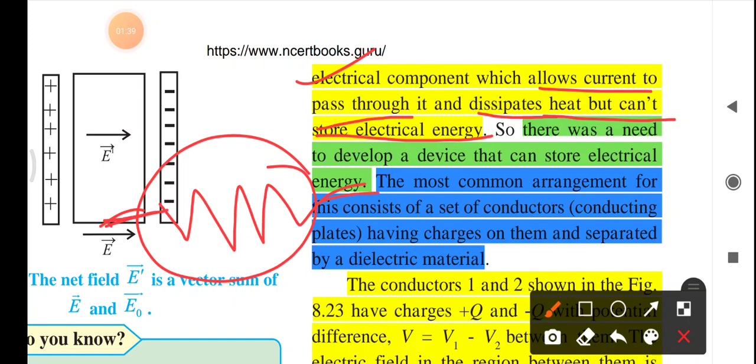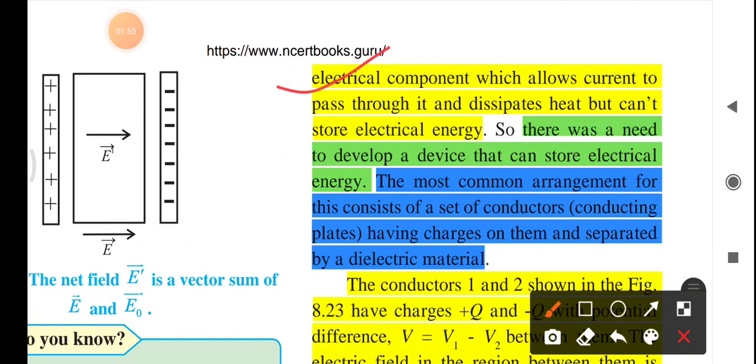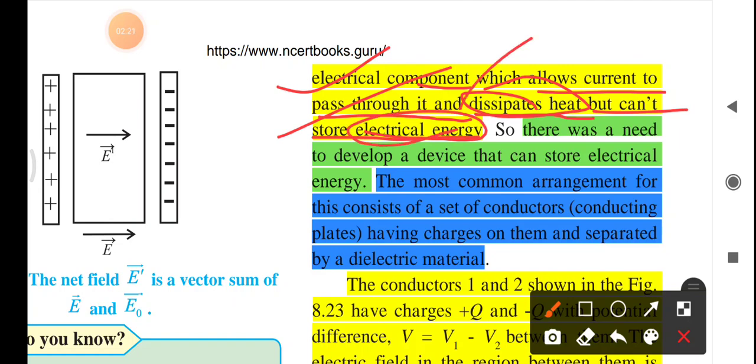Resistance means what? Opposition to the flow of the electric current. Just as in mechanics, friction is important—too little friction and motion is not possible, too much friction and motion is also not possible. Similarly, minimum resistance is good, but higher resistance is lack of conductivity. An electrical component which allows the current to pass through it dissipates heat but cannot store the electrical energy.